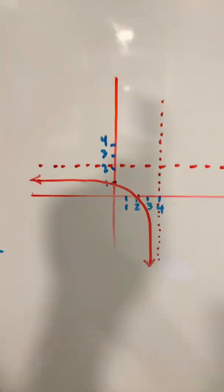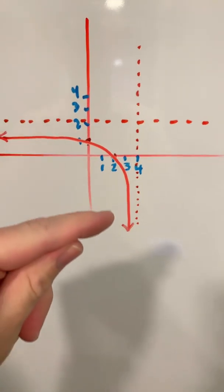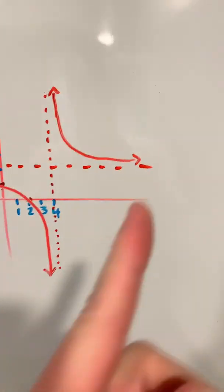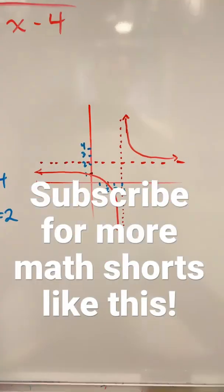Now, if you sub x values into the function that get closer to 4, you're going to see that this function heads off towards negative infinity. And if you sub in x values from the right of 4, you're going to see that you're going off to positive infinity. Beautiful.